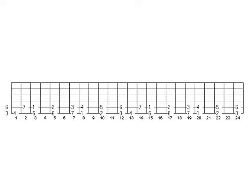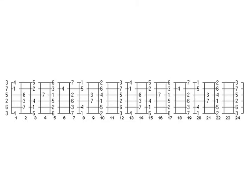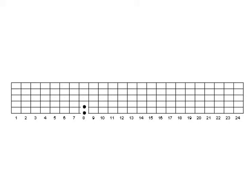Now combining the information from the low E and A strings, the D and G strings, and the B and high E strings, you've actually learned the entire fretboard for the major scale or Ionian Mode by learning only two two-note shapes — either the perfect fourth shape or the augmented fourth shape. Now that we've laid things out vertically up and down the strings, let's see how this information works moving horizontally across the strings.